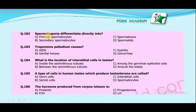Spermatogonia differentiate directly into: primary spermatocytes, spermatozoa, secondary spermatocytes, or spermatids? The correct answer is primary spermatocytes. This MCQ will be explained next.